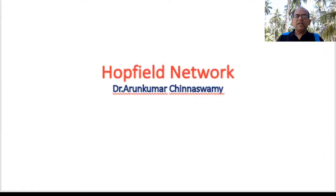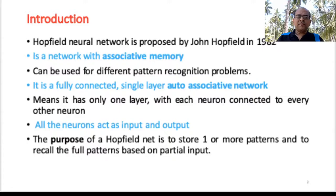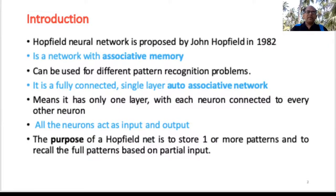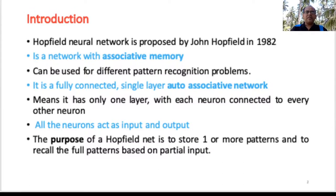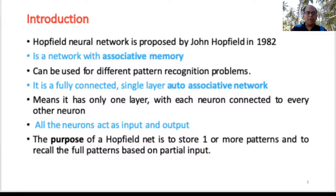Welcome to the video lecture on Hopfield networks. Hopfield networks were proposed by John Hopfield in 1982. This is a network with an associative memory. The key advantage of a Hopfield network is it can be used for different pattern recognition problems. This network is fully connected and is a single-layer auto-associative network, meaning each neuron is connected to every other neuron and acts as both an input and an output.